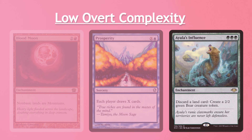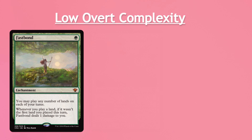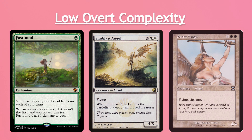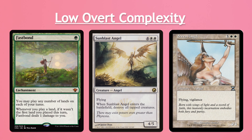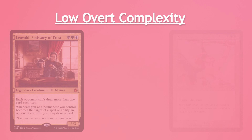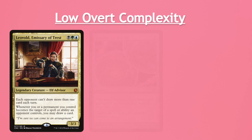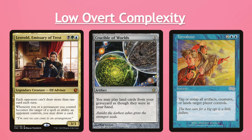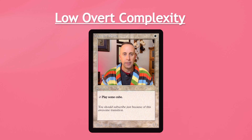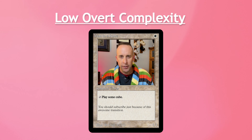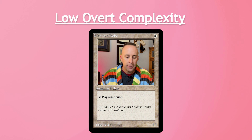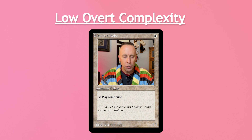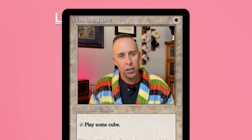Yenna is what we will call high on comprehension complexity. Her activated ability copies enchantments that you don't already have other copies of. Then, if Yenna targeted an aura, she untaps and you get some card selection. As a player, you likely had to read and then re-read that rules text maybe two or three times to fully understand it.